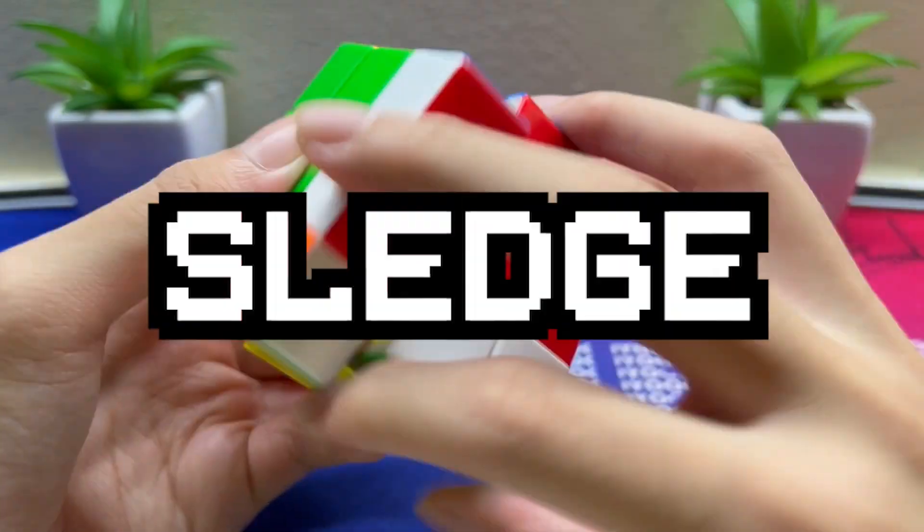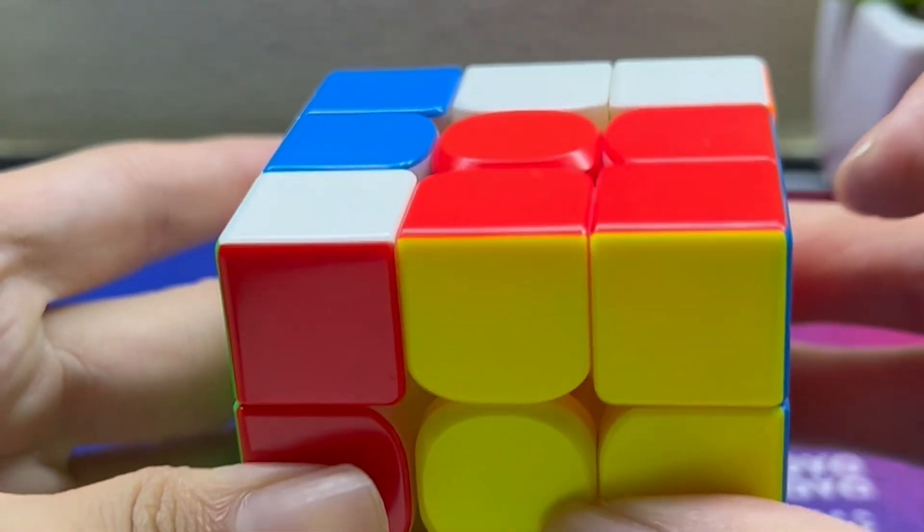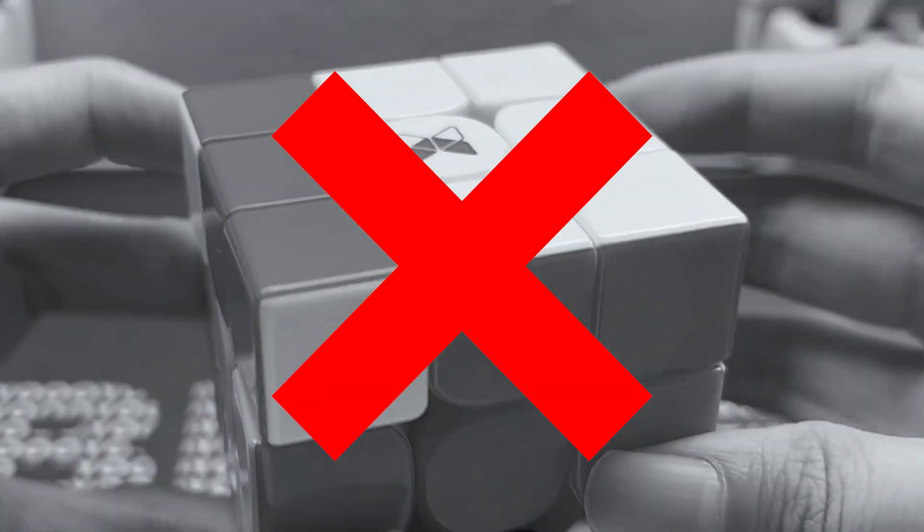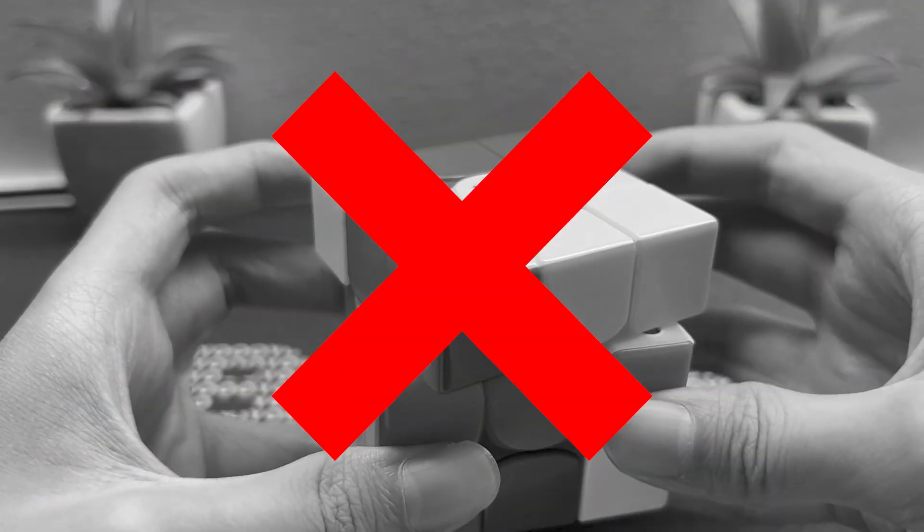One notable exception is the sledge, where yes, a solved pair will end up on the top. Since we are not doing U moves, it will not be affected. Wait, how do you put this concept into practice? That leads me to my next point.